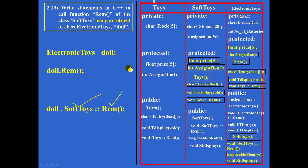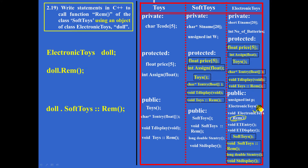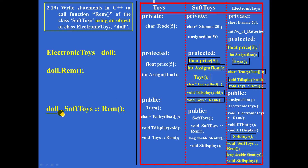This is an important type of question. Doll is an object of class electronic toys, so using doll, if I try to call remarks, remarks of class electronic toys will be called by default. To call remarks of class soft toys, the full name of remarks must be written: class name, scope resolution operator, function name. So it is doll dot soft_toys::remarks.